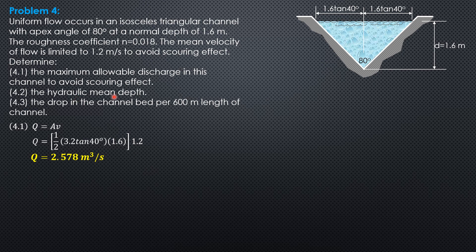The hydraulic mean depth is simply the hydraulic radius, and it is equal to area over wetted perimeter. The area is 2.578 over 1.2, or this area here. The wetted perimeter, because this is 1.6 over cosine 40, one slope, so 0.5 of 3.2 tangent 40 times 1.6, that's the area, 2.148 square meters.